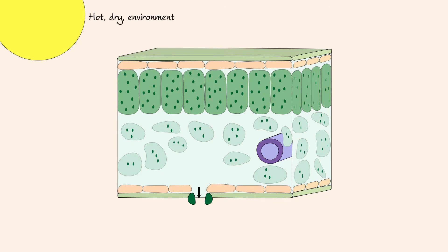Plants in hot, dry environments lose a significant amount of water through their stomata. Essentially, plants become dehydrated. To prevent water loss, these plants close their stomata.